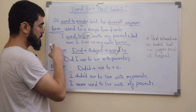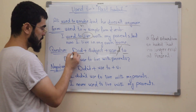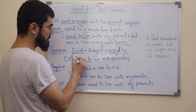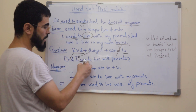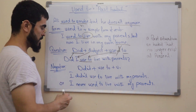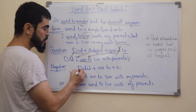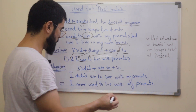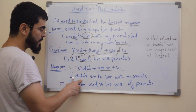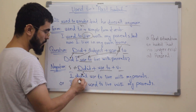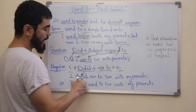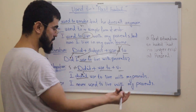As a structure: Did + subject + use to + verb 1. For example: 'Did I use to live with my parents?' For the negative, we use didn't plus 'use to' plus verb 1. We use the subject first, then didn't, then 'use to' — again removing the D of 'used to.' For example: 'I didn't use to live with my parents.' This is the negative form.